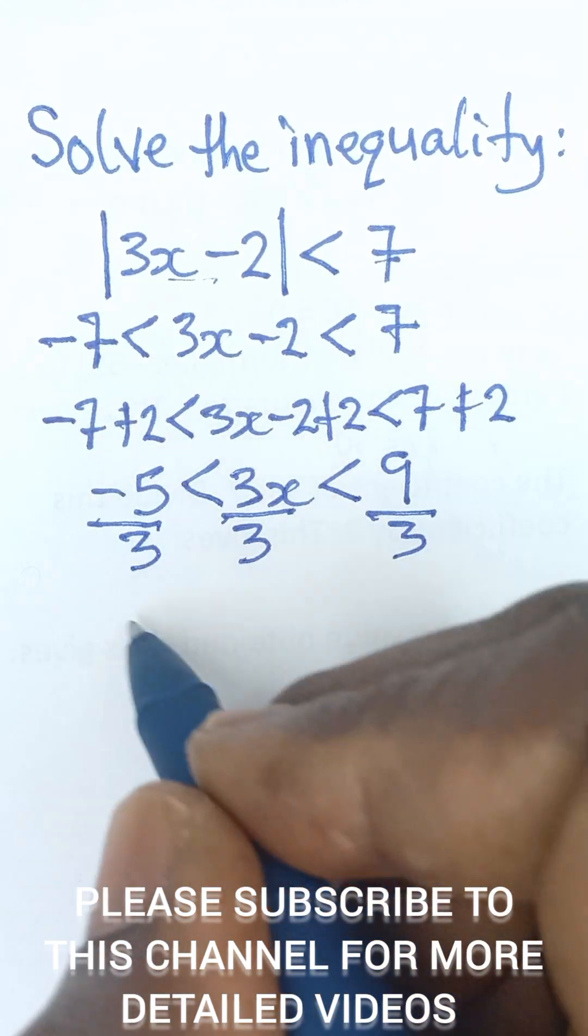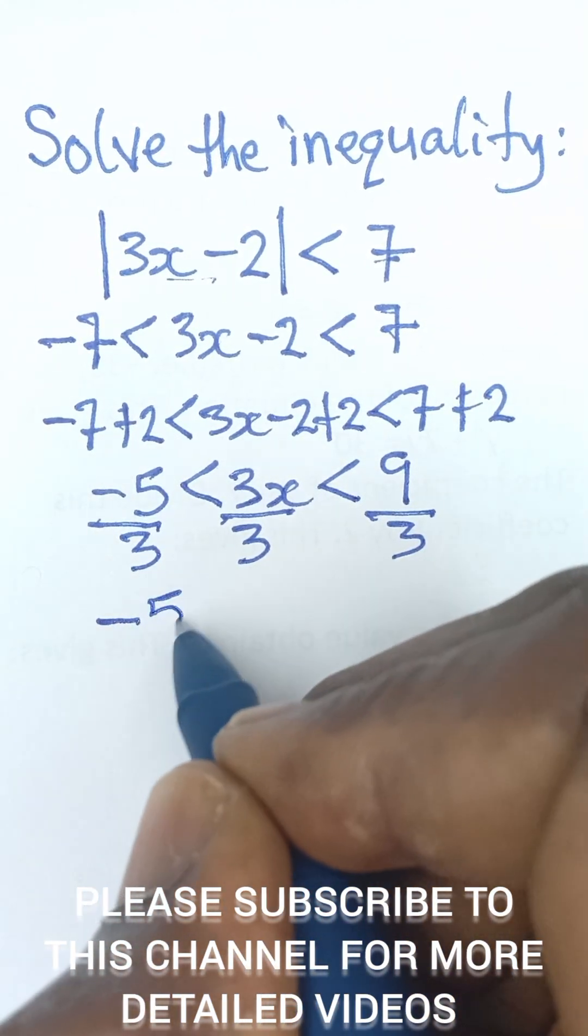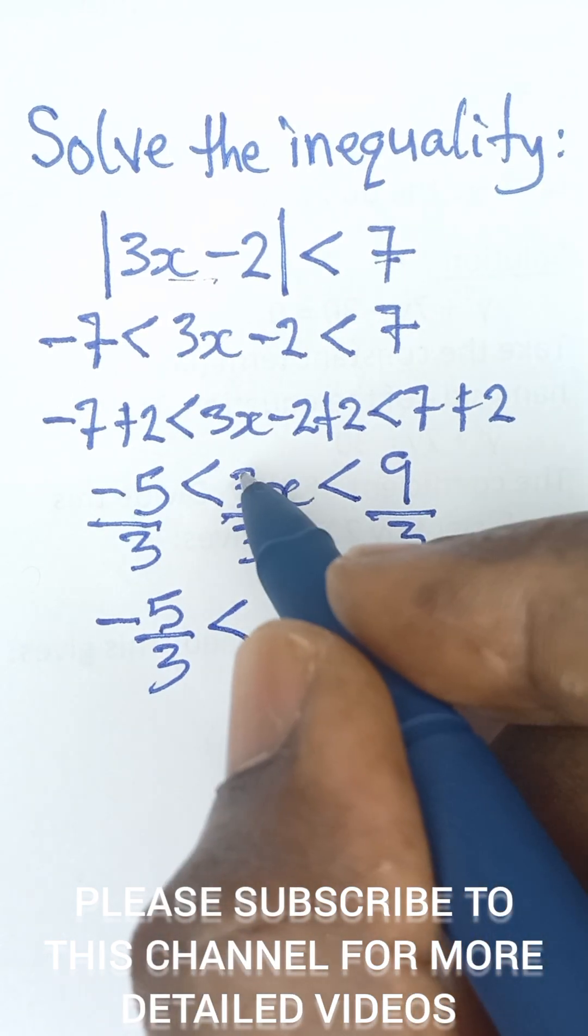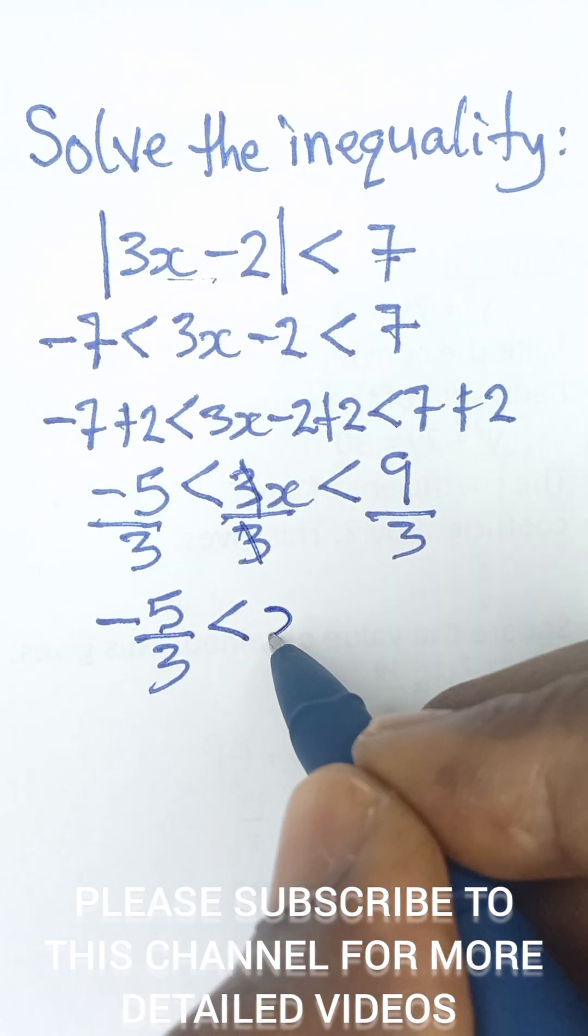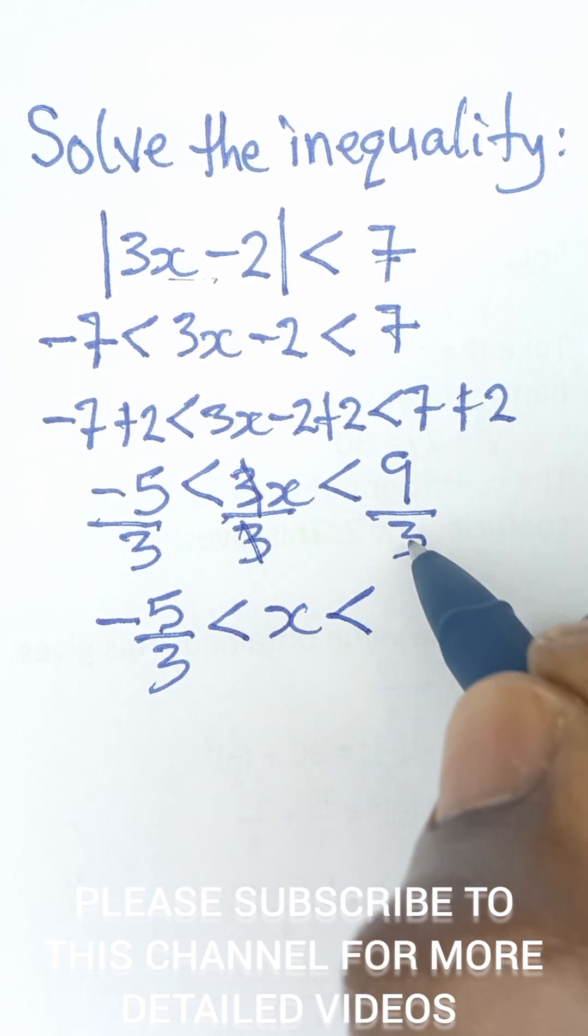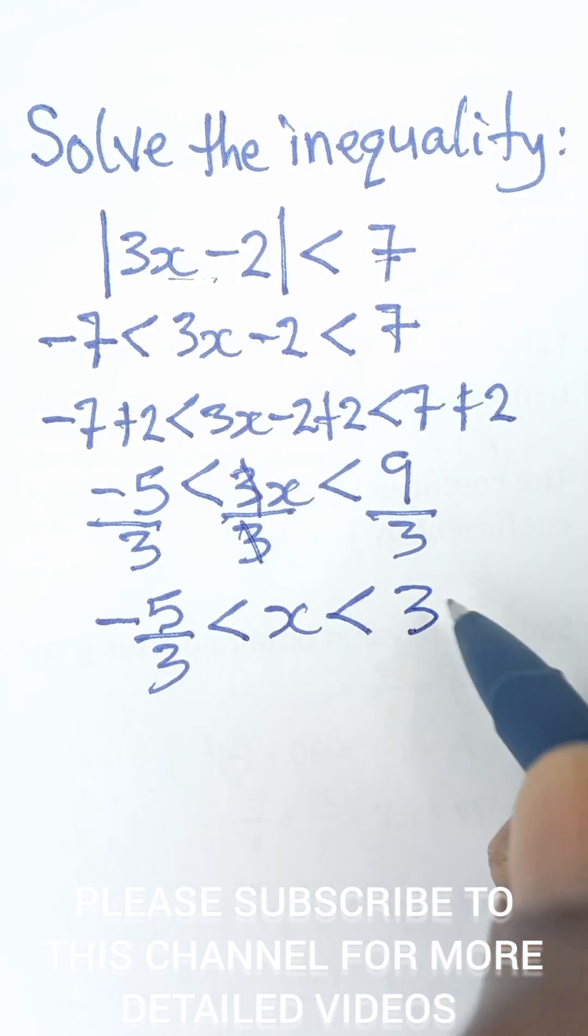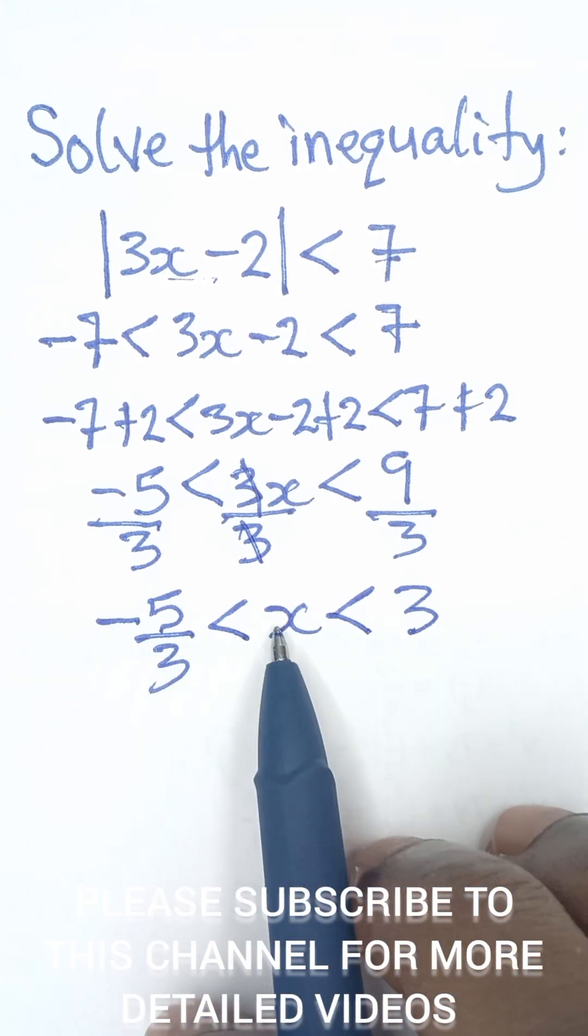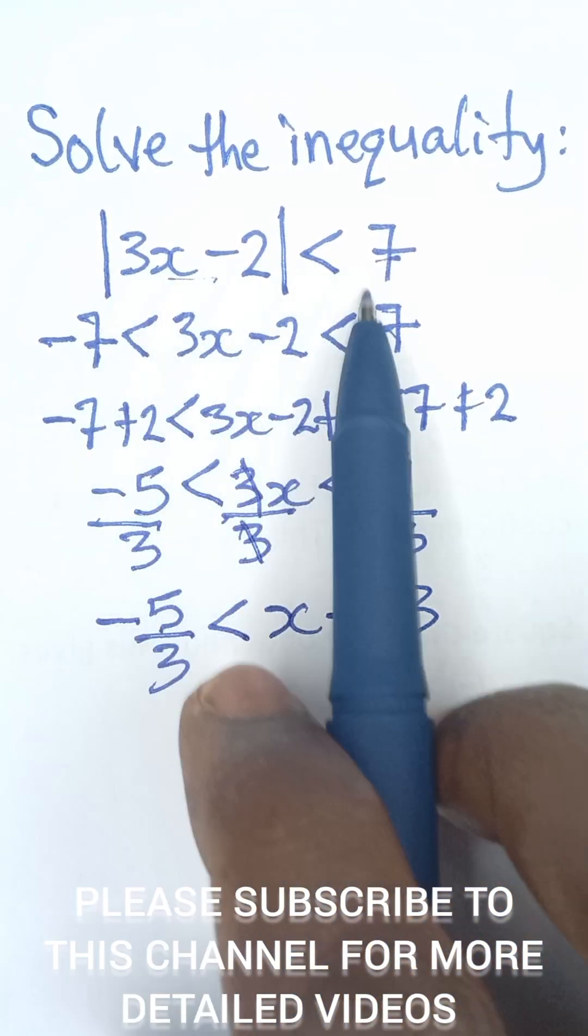So finally this here becomes negative 5 over 3, and it's less than 3 cancels 3, we are left with x, and then it's less than 9 divided by 3 is 3. So this is the range of values of x that satisfy this inequality.